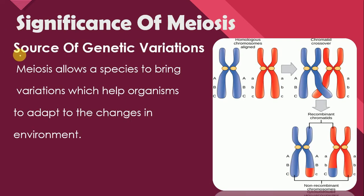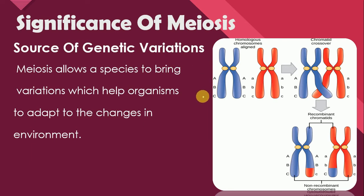Let us discuss the second significance of meiosis: it is a source of genetic variations. Meiosis allows the species to bring variations which help organisms to adapt to changes in the environment. Genetic variations here means changes in the base sequence of DNA. These variations come from two ways: one is mutation and another is crossing over. In prophase 1 of meiosis 1, when non-sister chromatids exchange their genetic material with each other, the resulting chromosomes are recombinant chromosomes, and they have variant genes which control different characters in the organisms.